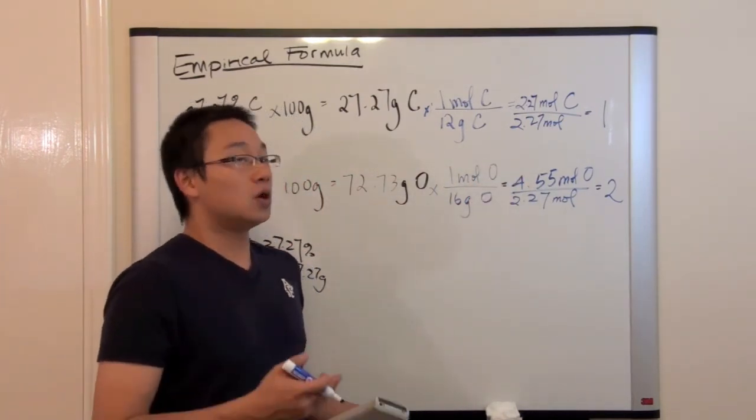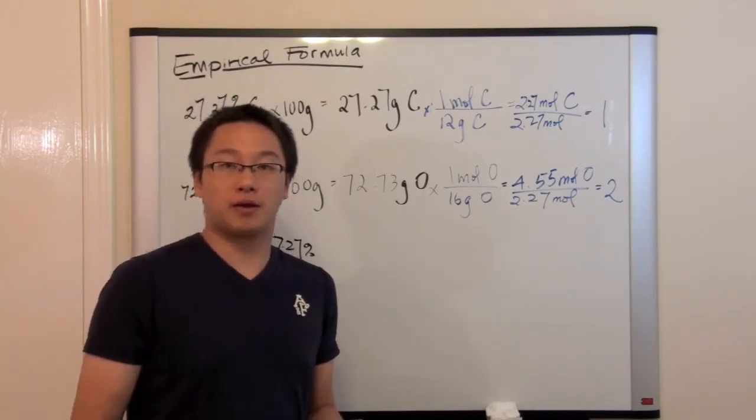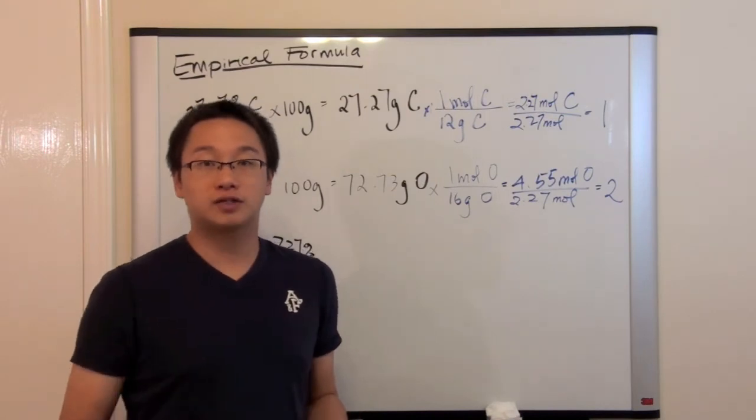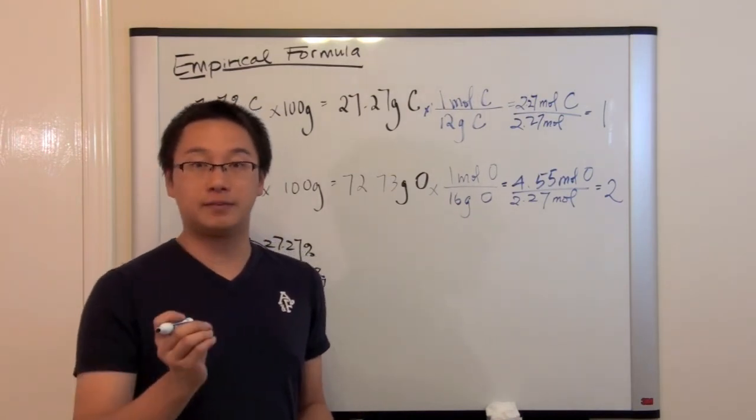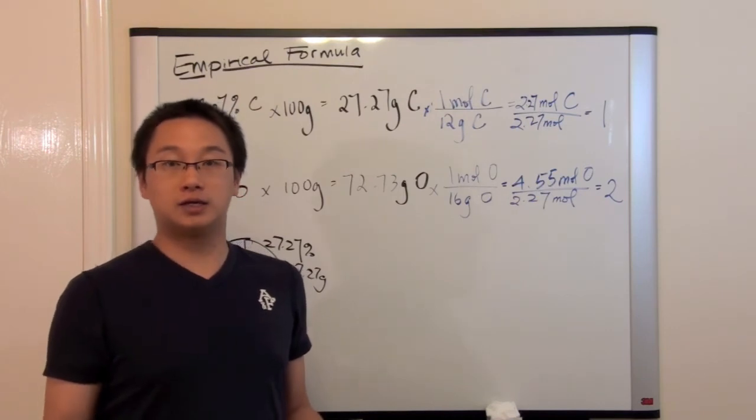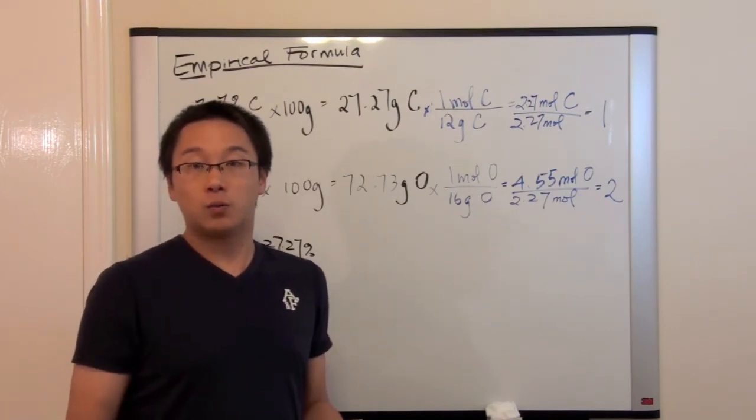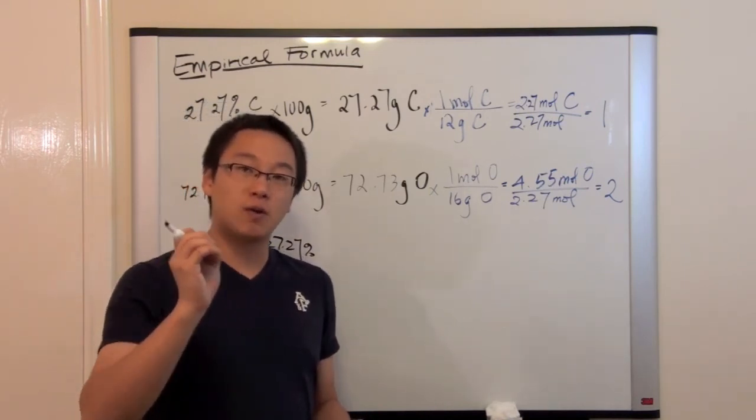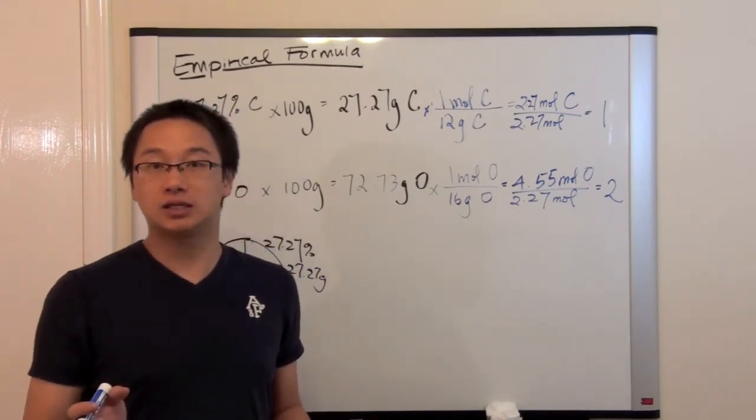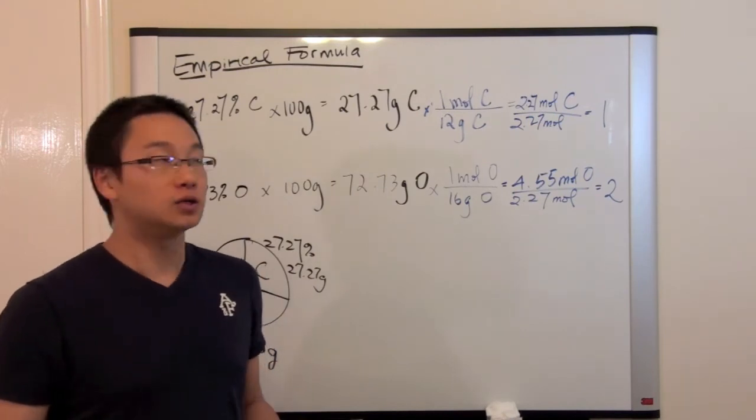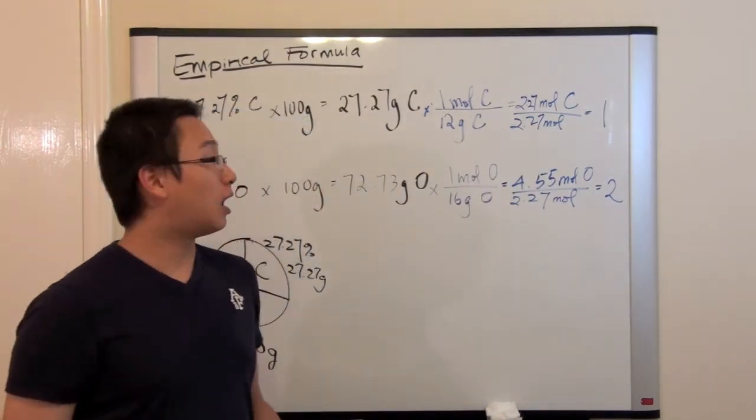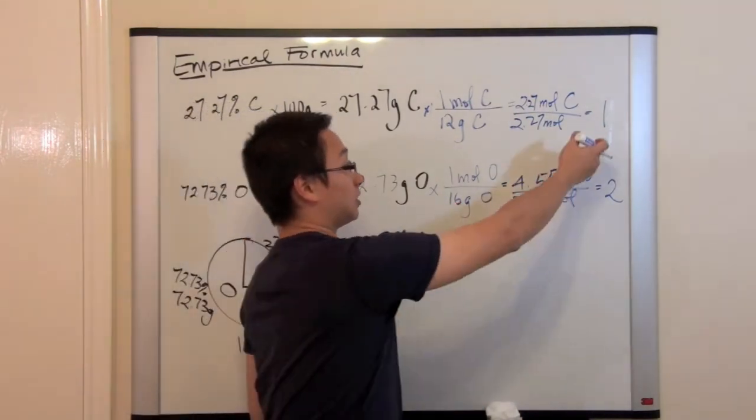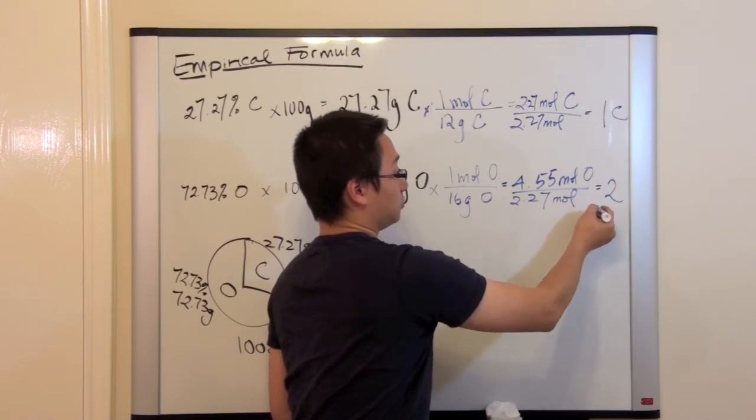The reason is, for a compound, it has these two elements. And the smallest possible subscript of the element is going to be one because there is an element and we know that the subscript must be a whole number. So the one that has the smallest quantity must at least have a number of one. So this is the reason why we divide by 2.27 because it's the smallest number and we will get the subscript of one carbon and two oxygen.